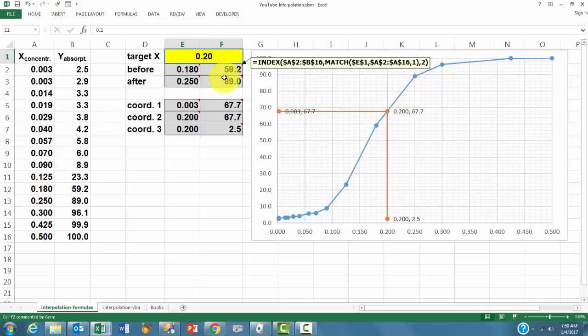We do something similar for the Y position. In this case, the formula is exactly the same, but the column position, that's the last argument for INDEX, is 2. We want to find it in the second column.